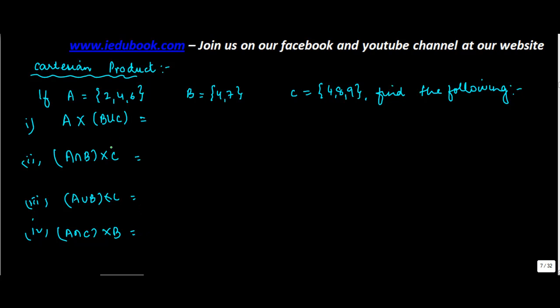Now, whenever you get such kind of questions, first you should ideally solve this. So you have A cross B union C. What is A? A is {2, 4, 6} cross B union C. So what will be the elements in B union C?